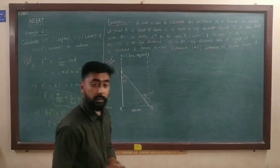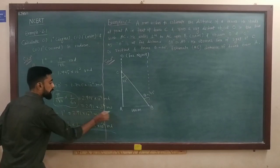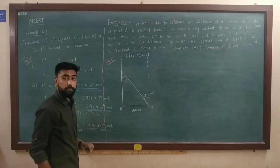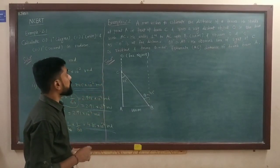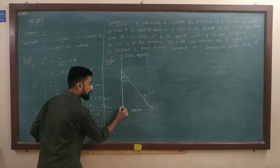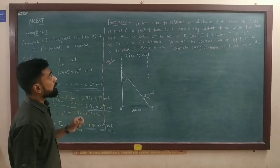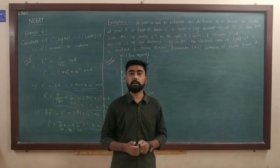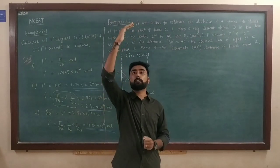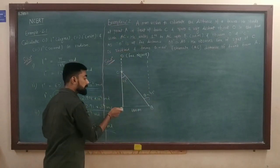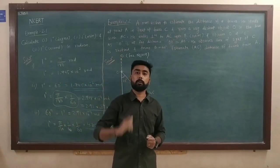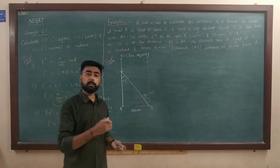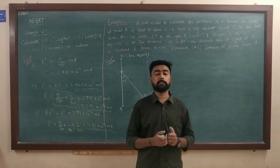This completes example 2.1 from NCERT. Now the next one is example 2.2: a man wishes to estimate the distance of a tower. He stands at point A in front of tower C and observes a very distant object O in the line with AC. If the object is at far distance, all the rays from here are almost parallel.